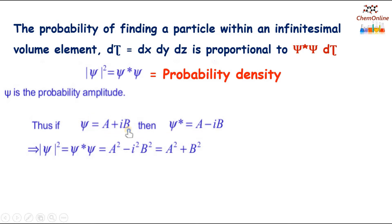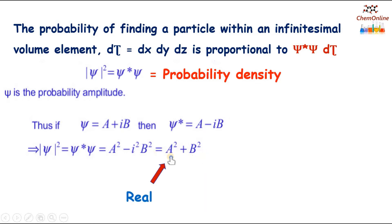The product ψ · ψ* = (a + ib)(a − ib) = a² − i²b². The value of i² is −1, so that equals a² + b², which is a real quantity. So ψ* · ψ can be written as ψ² = a² + b². The product is also real.